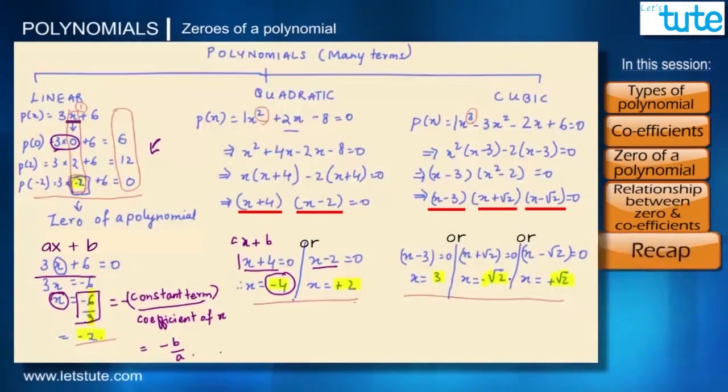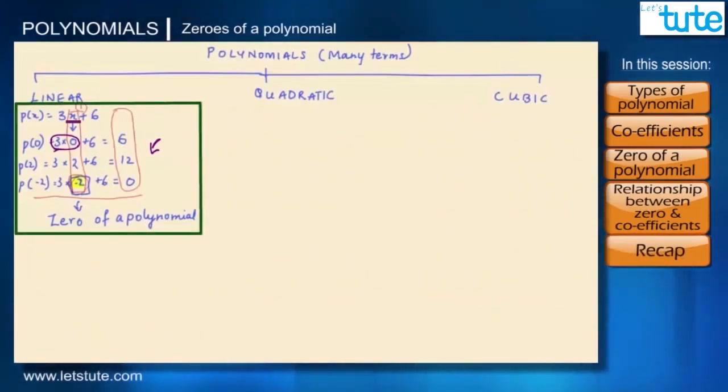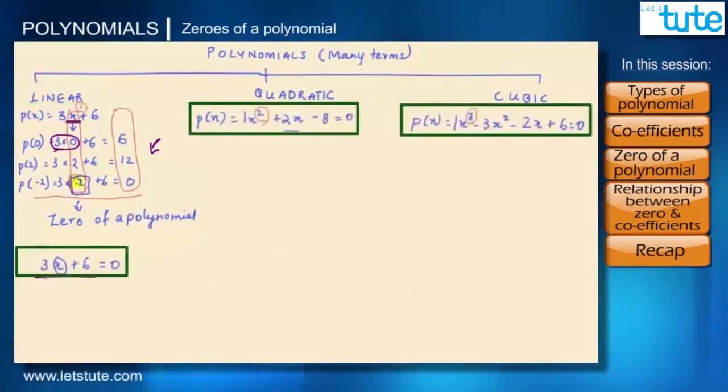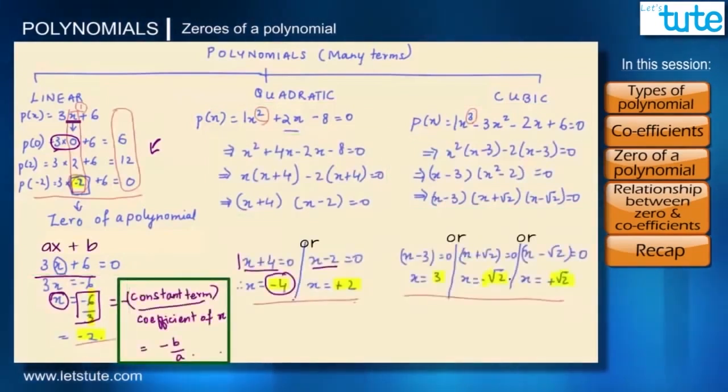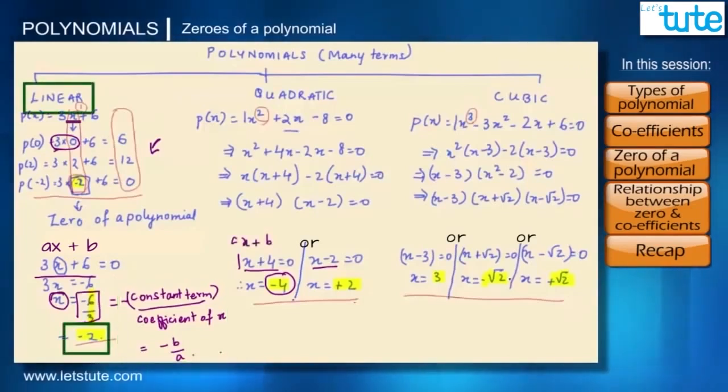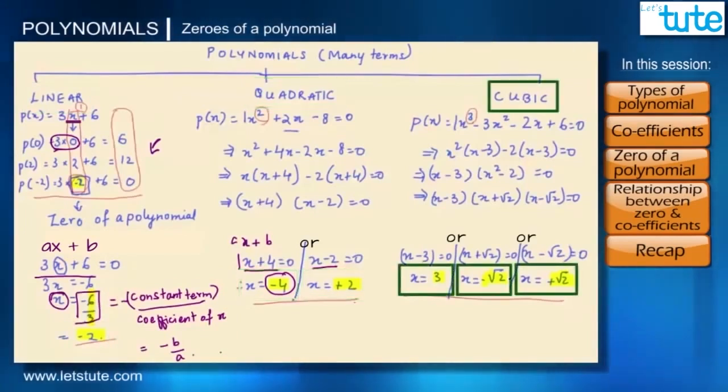Let's have a quick recap of what all we've studied so far. We know what is zero of a polynomial. How to find zero of a polynomial by equating it with zero and then factorizing it. Then we saw the relation between zeros and coefficients of a linear polynomial that is minus b upon a. Then we saw that a linear polynomial can have only one zero. A quadratic can have a maximum of two zeros. And for cubic, we could have a maximum of three zeros.